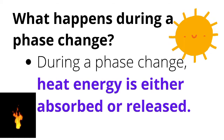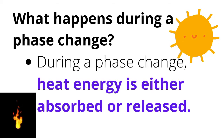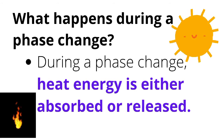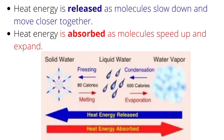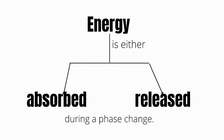What happens during a phase change? During a phase change, heat energy is either absorbed or released. Heat energy is released as molecules slow down and move closer together. Heat energy is absorbed as molecules speed up and expand.